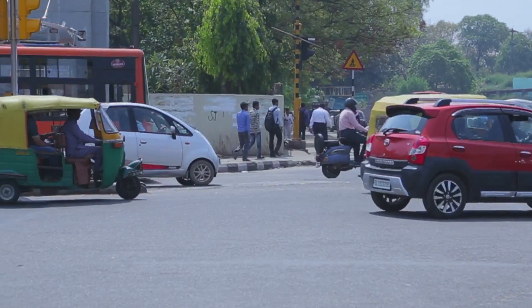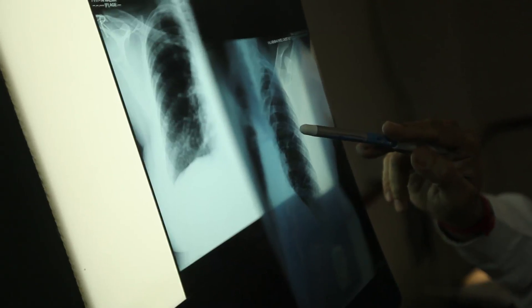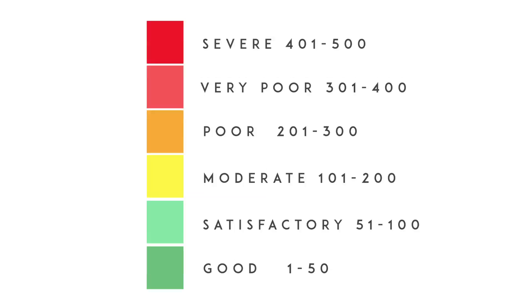We have been measuring the level of pollutants in air for a number of decades now, but what was not happening is these pollution numbers were not getting to the public. This is what this index tries to do — it throws up one number which is given to the public, along with an associated color code, so people will know how good or bad their air quality is.